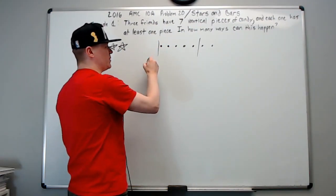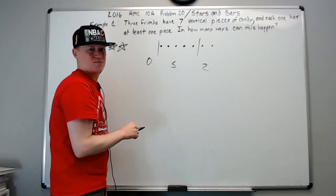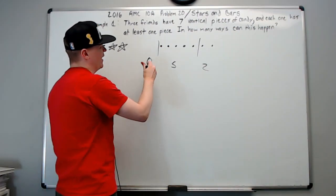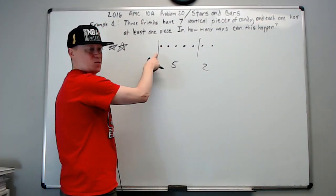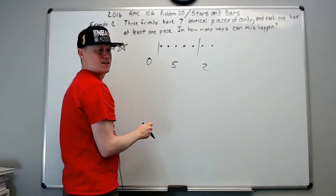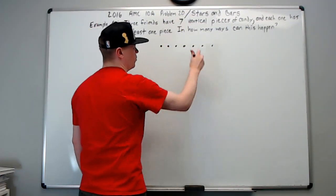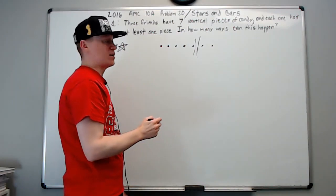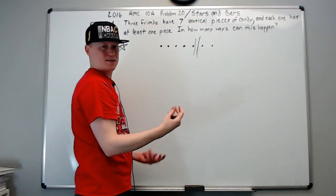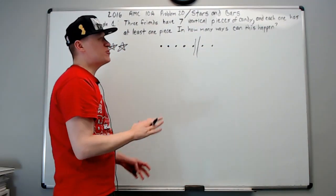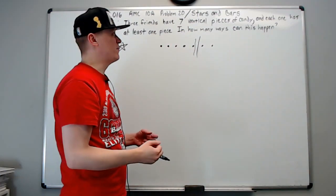If you move one divider to the outside, that's not allowed because it gives zero, five, and two — one friend gets no candy. You also cannot place two dividers within one gap, because that again would give someone zero. You can allow zero for some problems, but we'll approach those differently in example two.